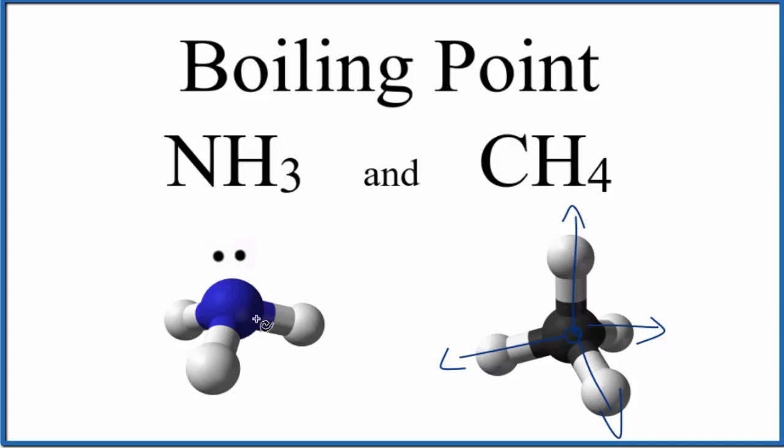But for ammonia, you can see we have the hydrogens down here, and then we have a lone pair up here. So on one side of it, we have the hydrogens, and then on the top, we have this nitrogen atom. So we have poles. We have a polar molecule.